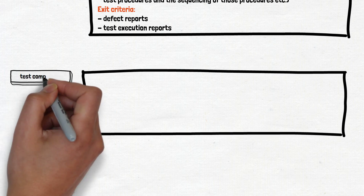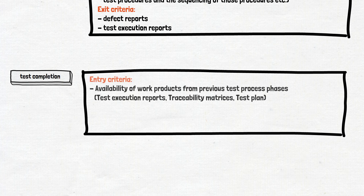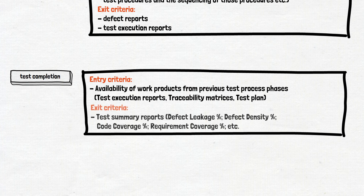Test completion or test closure activities use the work products from all previous test process phases. The tester evaluates whether what was planned in the test plan corresponds to what was done, using the metrics determined during the test planning activity. As a result, test summary reports are formed. Depending on the project, the defect leakage, defect density, code coverage, and requirement coverage are calculated.